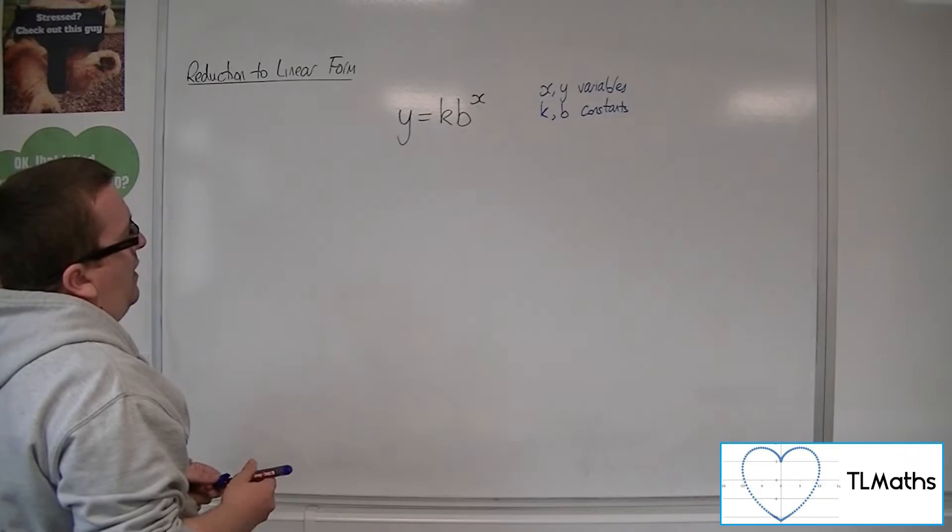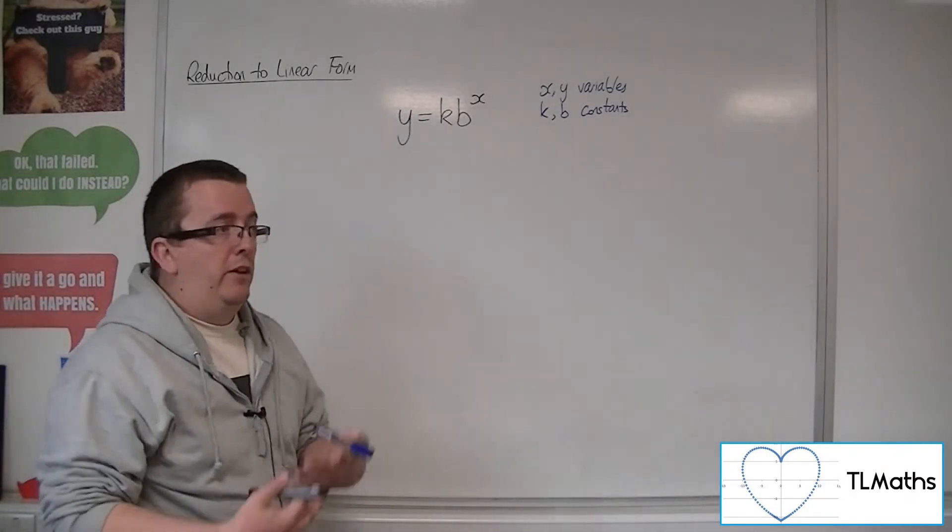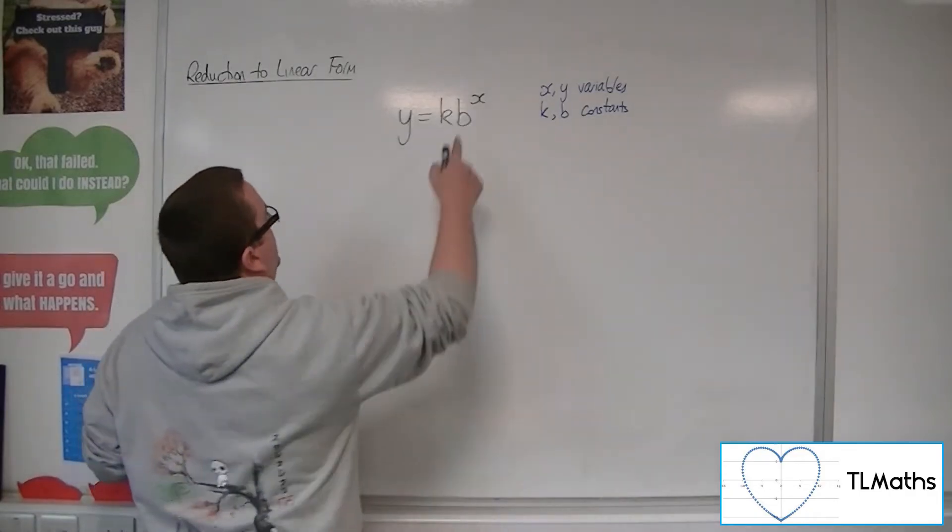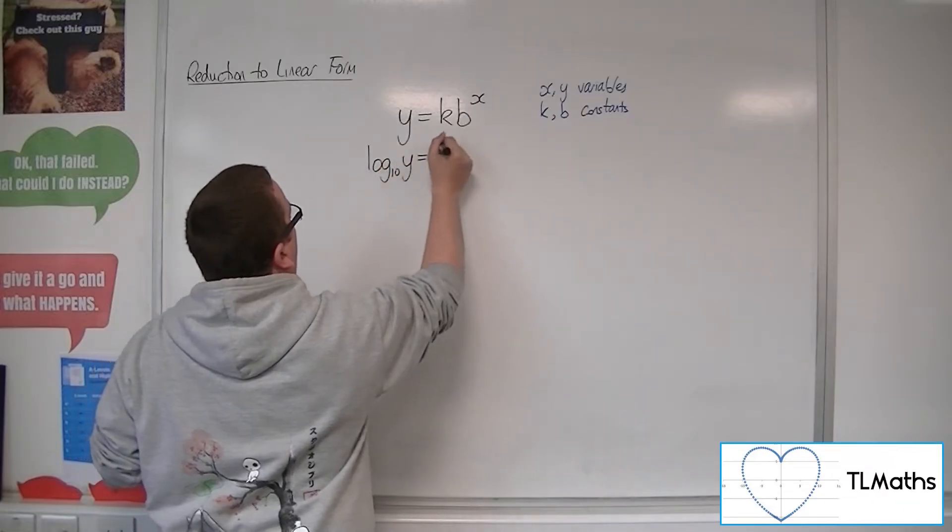Now, we are going to reduce this to a linear form. And once again, we use logarithms because we've got that power there. So because we've got that, we'll take log base 10 of both sides.